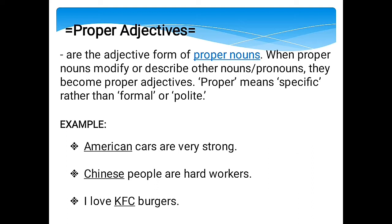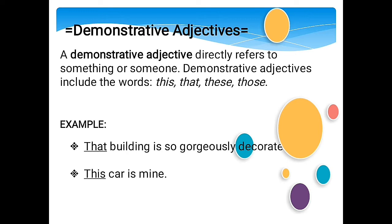The next type is demonstrative adjectives. A demonstrative adjective directly refers to something or someone. Demonstrative adjectives include the words this, that, these, and those. For example, 'That building is so dangerous' — that refers to a singular noun far from the speaker. 'This car is mine' — this refers to a singular noun close to the speaker.